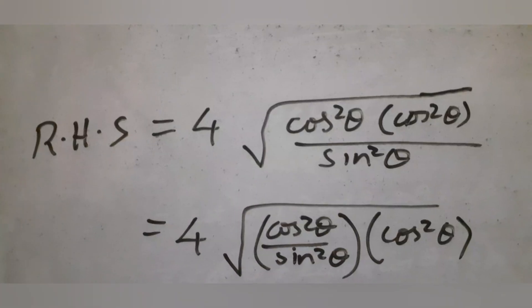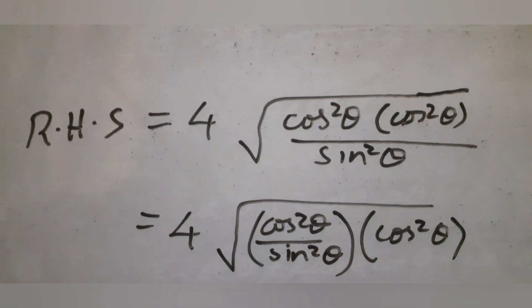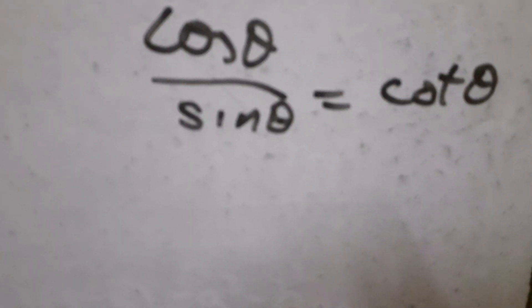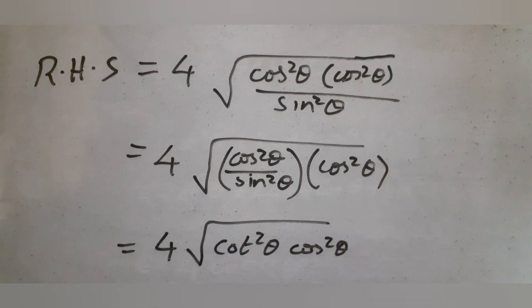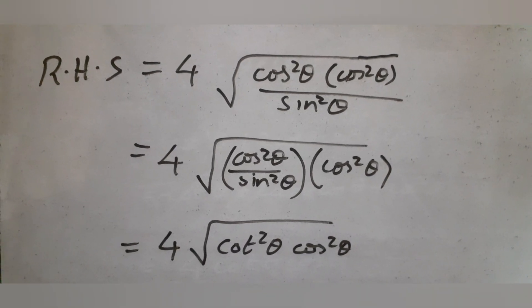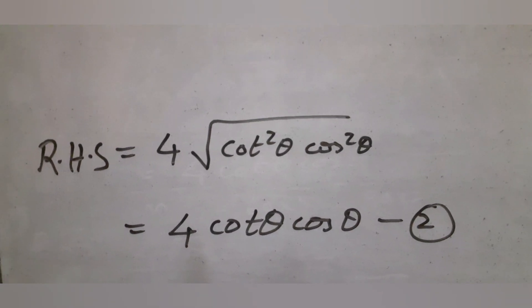Now we group cos θ / sin² θ. We use cos θ / sin θ = cot θ. On taking the square root, we get RHS equal to 4 cot θ cos θ, which is the same as the LHS that we obtained earlier.